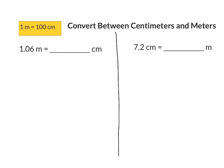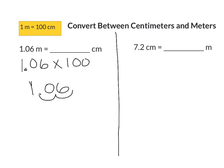For our first examples, we're going to be converting between centimeters and meters. The conversion factor is 1 meter equals 100 centimeters. For our first example, we have 1 and 6 hundredths meters, and we have to figure out how many centimeters that's equal to. When we're going from meters to centimeters, we're going to be multiplying by 100. So we take 1 and 6 hundredths meters, multiply that by 100, and when you multiply by 100, you move your decimal point two places to the right.